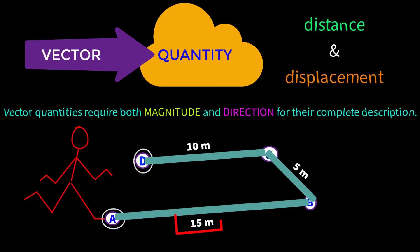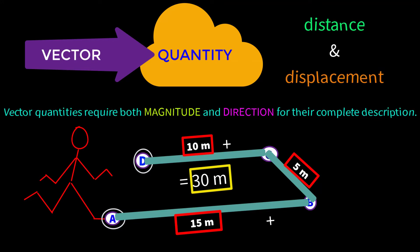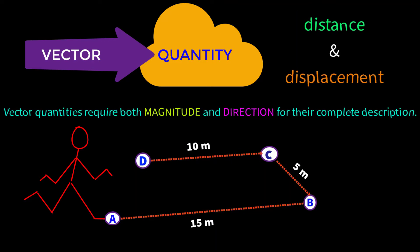To measure length we do not need to know any direction — we need only its magnitude. By length we measure distance. So this 30 meters is the total distance covered by the boy. To describe distance completely we need only its magnitude, so we can say that distance is a scalar quantity.